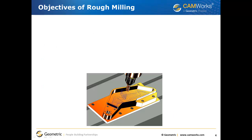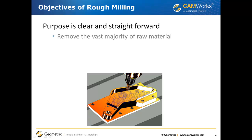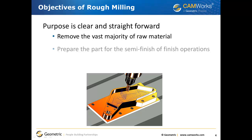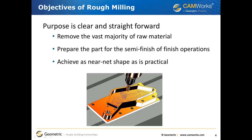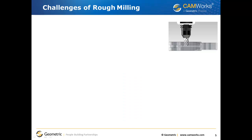The objectives of the rough milling process are clear and straightforward. The first objective is to remove the vast amount of raw material as quickly as possible. The second objective is to prepare the part for finishing by leaving a small amount of material on all surfaces for semi-finish or finishing operations. The final objective is to achieve as near-net of final shape as practical, particularly on three-dimensional multi-surface parts.